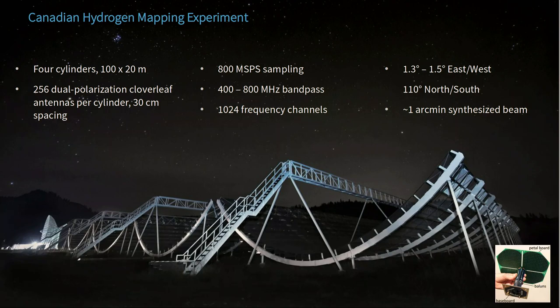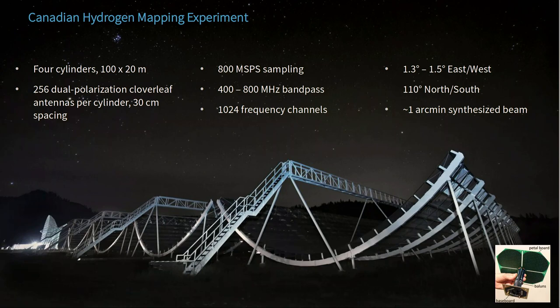CHIME was originally built as a 21-centimeter intensity mapper, designed to look for neutral hydrogen emission from galaxies between redshifts of 0.8 and 2.5. It's probably one of the strangest shaped telescopes in the world — it's made up of four half-pipe cylinders that act as reflectors, and along each focal line there is a set of cloverleaf petal feeds which act as the dual-polarization receiving elements. With this weird shape, it has a field of view that's 120 degrees north to south and about 1.5 degrees east to west — like a big cigar shape. Combining all of the information, it's capable of about one arc minute of resolution.